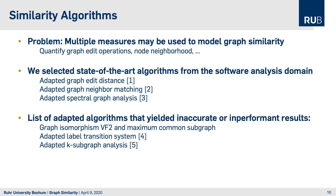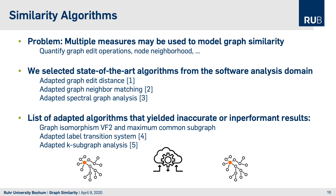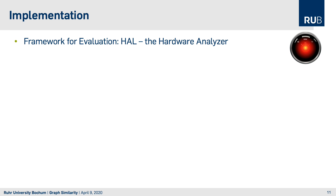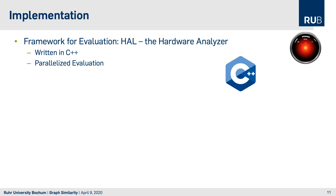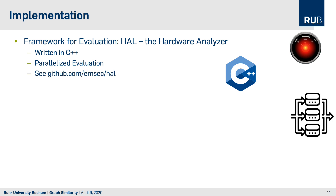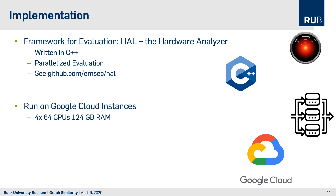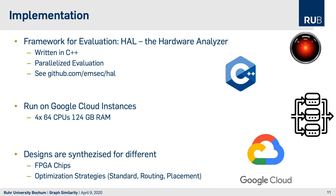These algorithms work by inputting two netlists or graphs and returning a similarity score for further analysis. We implemented our analysis using the HAL framework — the Hardware Analyzer — which gives us a graph structure for a given netlist. It is written in C++ for performance reasons, with added parallelized evaluation strategies, and is available as an open-source project on GitHub. We ran our tests on several Google Cloud instances, each with 64 CPUs and 124 GB of RAM, using designs synthesized for different FPGA chips and optimization strategies.